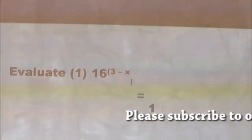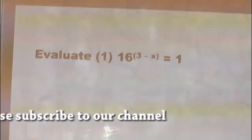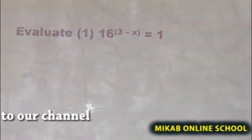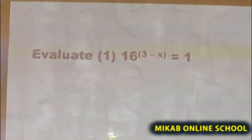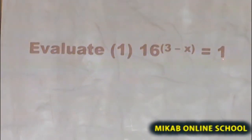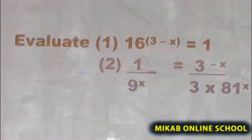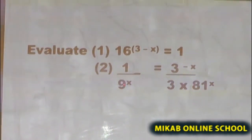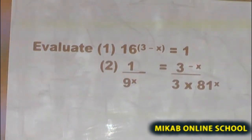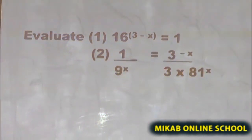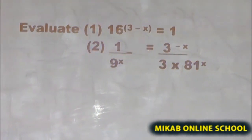The first example we are going to look at is: evaluate 16 raised to the power of (3 minus x) equals 1. The second one is given as 1 all over 9 raised to the power of x, equals 3 raised to the power of minus x, all over 3 times 81 raised to the power of x.